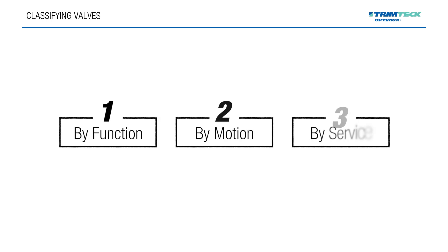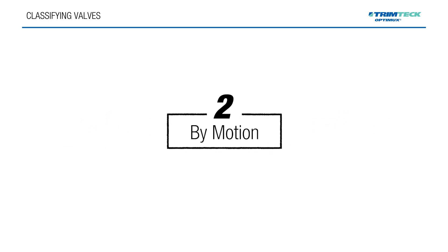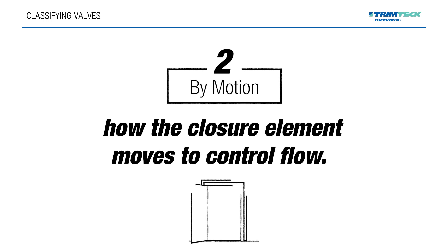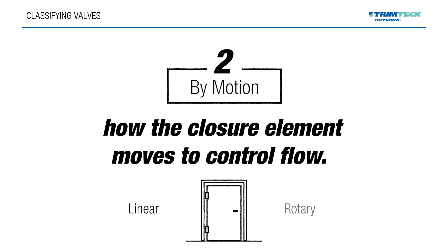The second way to classify valves is by motion — how the closure element moves to control flow. There are two main types: linear and rotary.